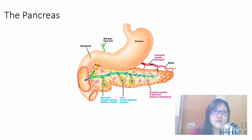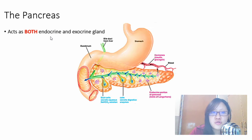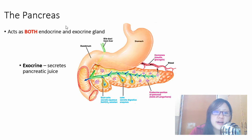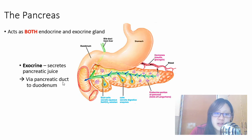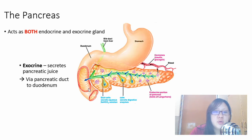So we've talked about exocrine and endocrine glands and what hormones are. The pancreas acts as both an endocrine and exocrine gland. As an exocrine gland, it secretes pancreatic juice via the pancreatic duct into the duodenum. You can see the duct cells connecting through the pancreatic duct into the duodenum — this juice contains enzymes needed for digestion. You do not need to know the details of those enzymes.